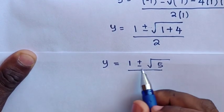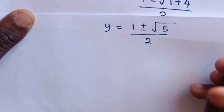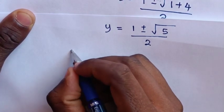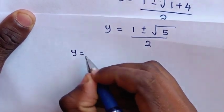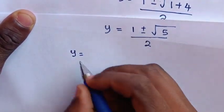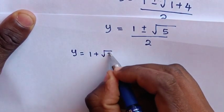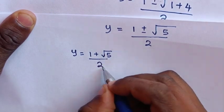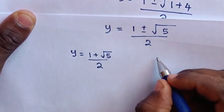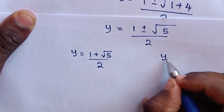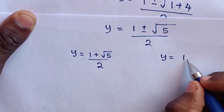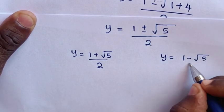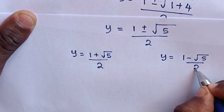We have two solutions: y = (1 + √5) / 2, and y = (1 - √5) / 2.